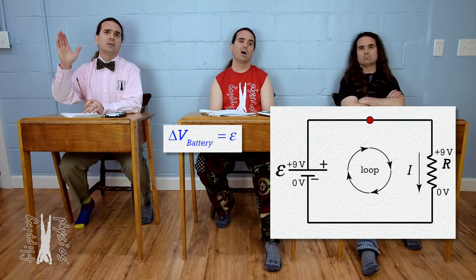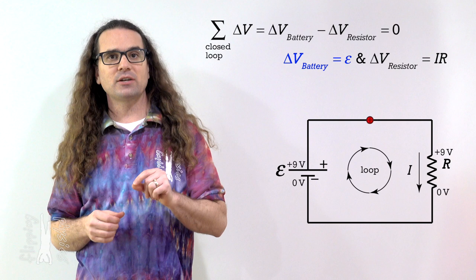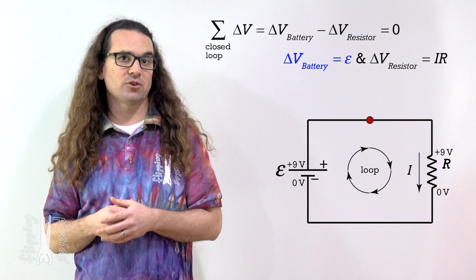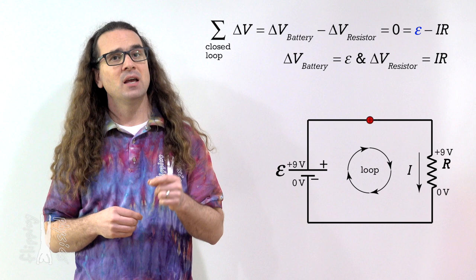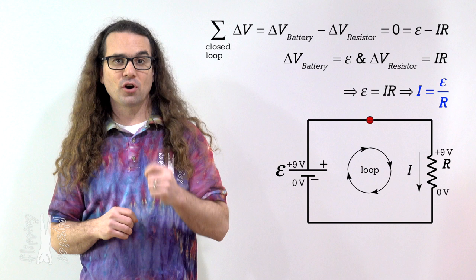The EMF and terminal voltage of our battery are the same because this is an ideal battery, yes? Correct. In our ideal battery, the electromotive force and terminal voltage are the same because ideal batteries have zero internal resistance. Now we can substitute EMF for the electric potential difference across the battery, and current times resistance for the electric potential difference across the resistor. After moving current times resistance to the other side, the current in the circuit equals the EMF across the battery divided by the resistance of the resistor.